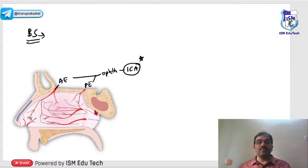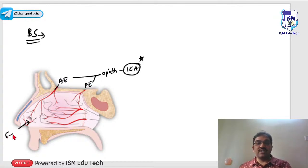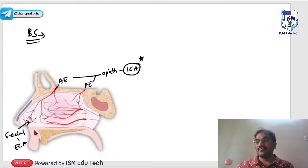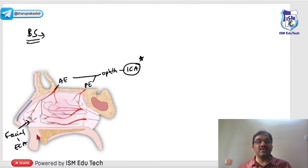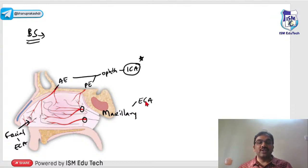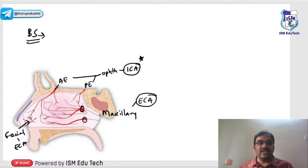The remaining anterior and posterior parts are supplied by external carotid artery branches. The anterior part is supplied by the facial artery, which is a branch of the external carotid artery. Posteriorly, two arteries come from the maxillary artery, which is also a branch of the external carotid artery.